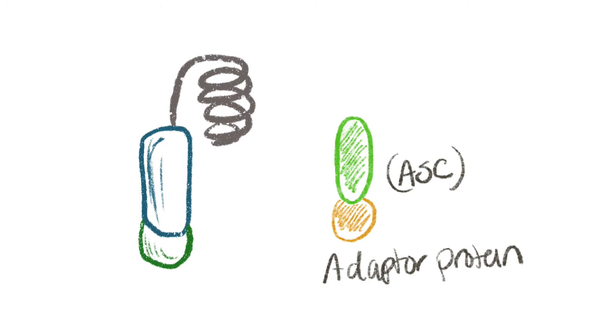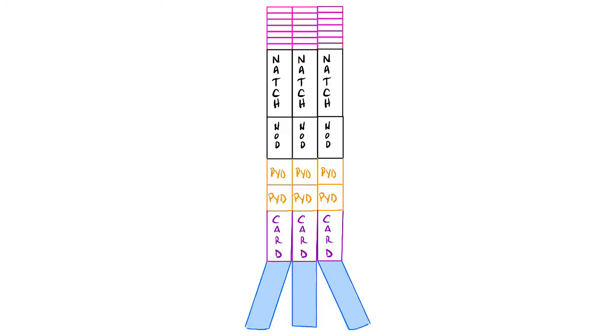This will then attach to a pro-caspase-1. So you have the NOD-like receptor which attaches to the adapter protein, which is comprised of a pyrin and a CARD domain, and then you have the pro-caspase-1 which will bind to that.